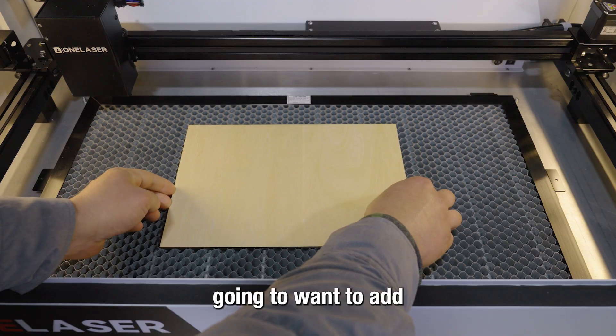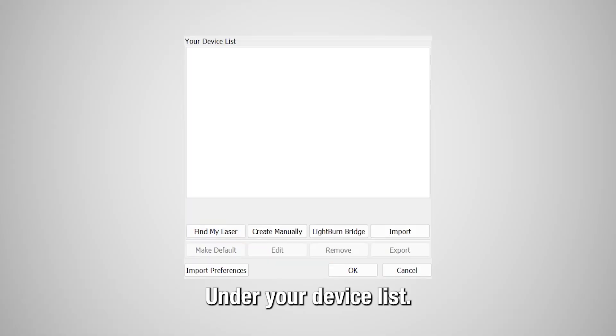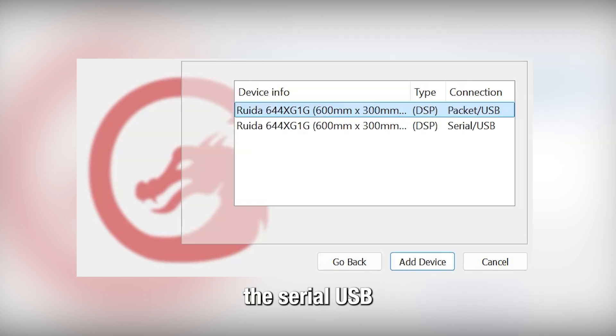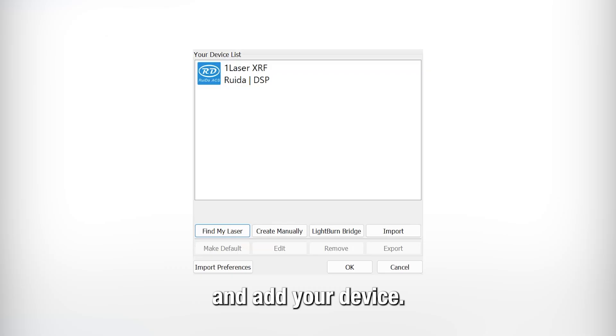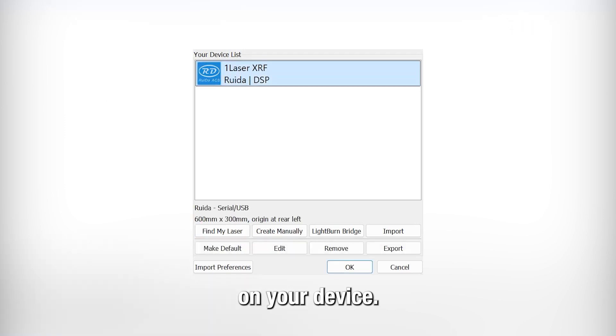Add your device. Under your device list, click 'Find My Laser,' and under device info, make sure you click the Serial USB and add your device. Click on your device and make it the default device.